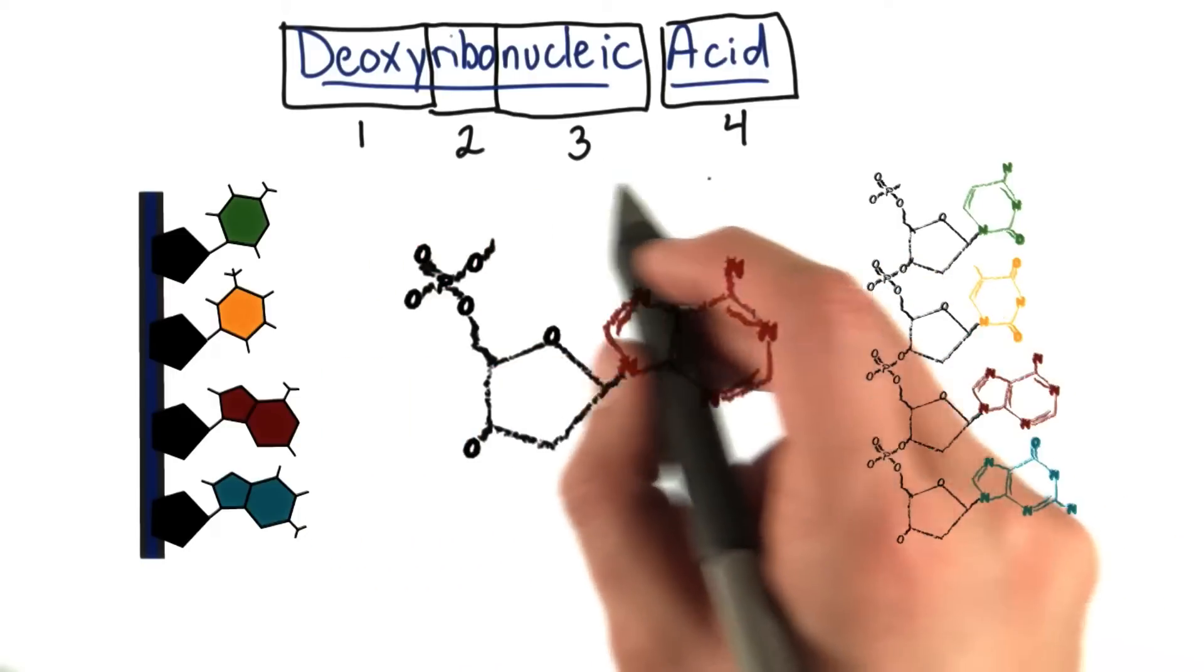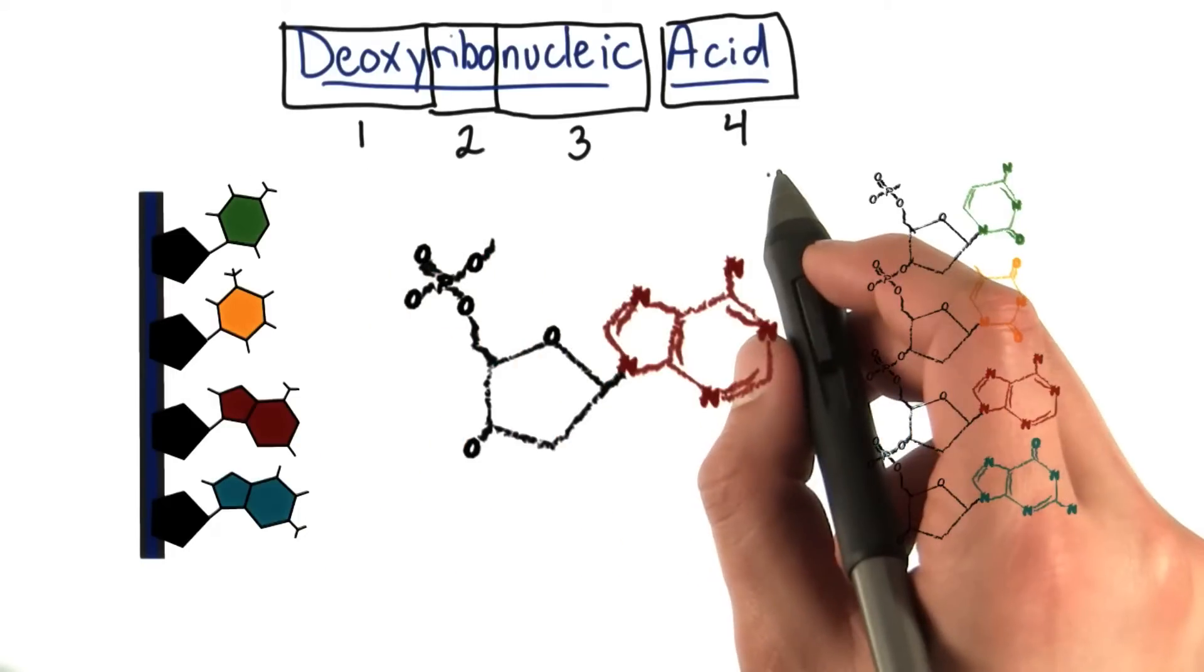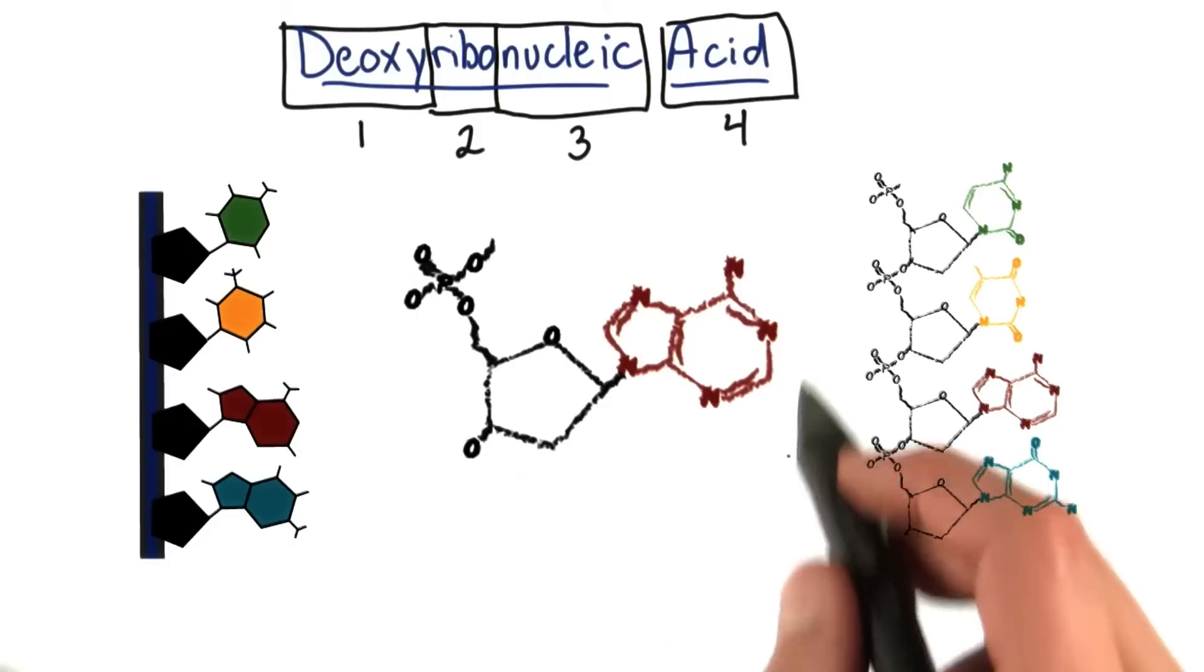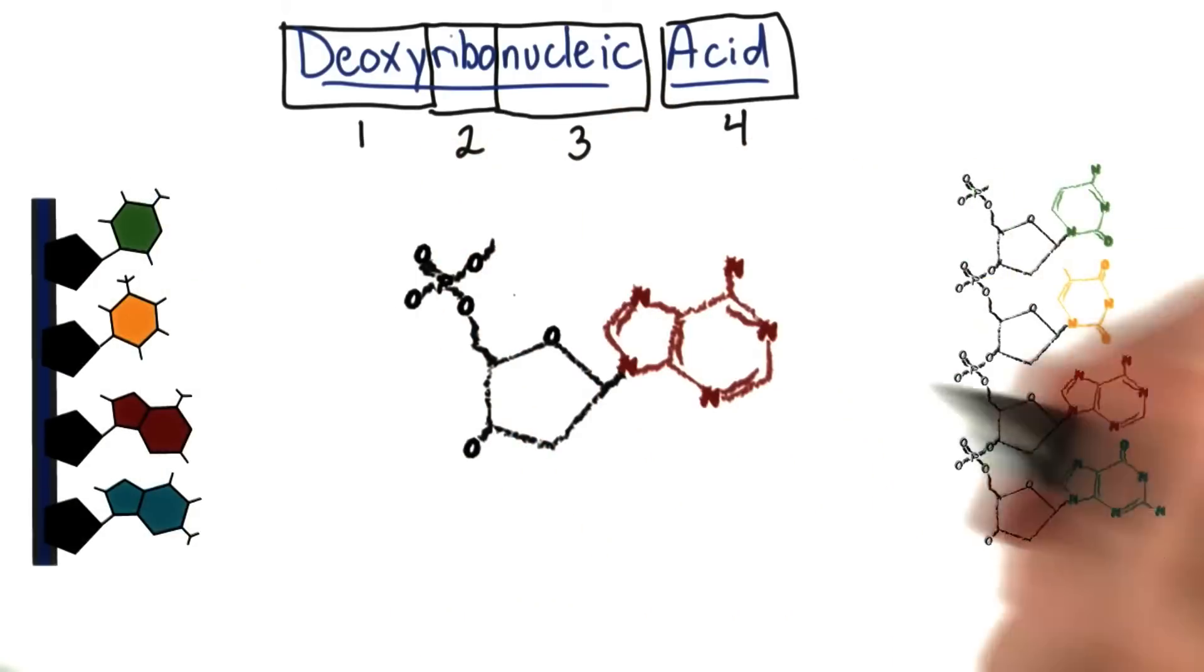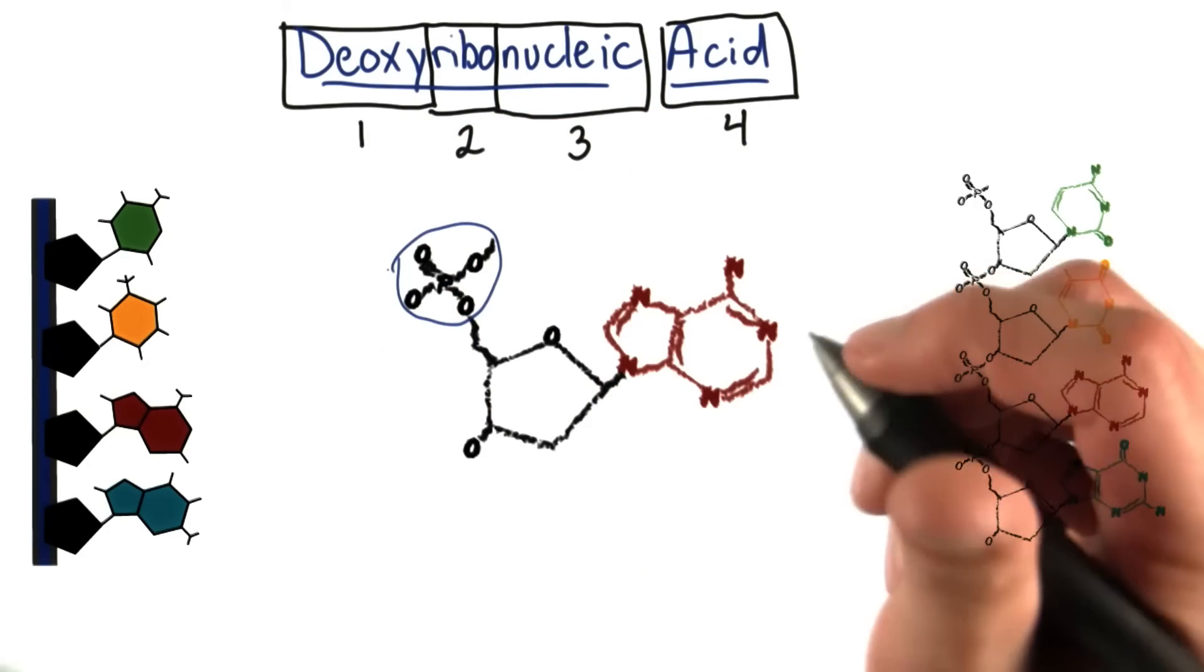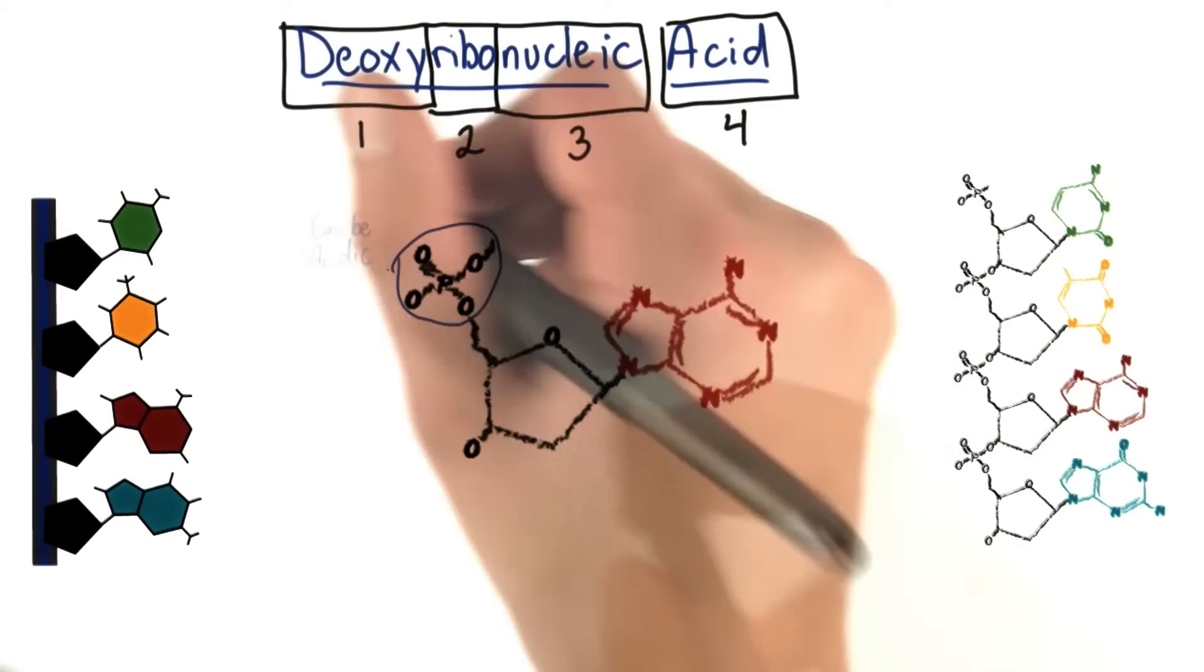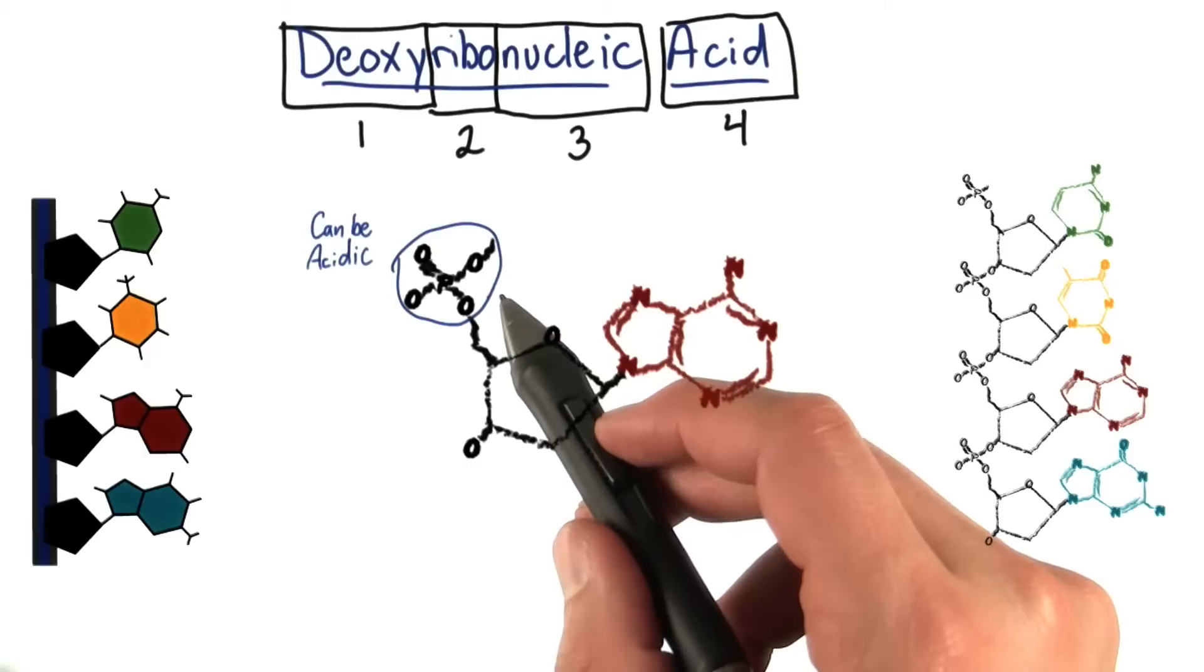Each of these four parts of deoxyribonucleic acid describe a specific part of this chemistry. For example, this part of the molecule here, called a phosphate group, can actually be acidic under certain conditions.